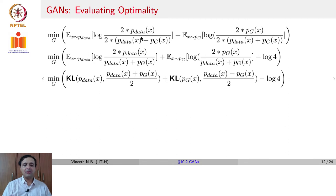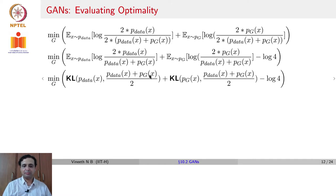The first term can now be written as a KL divergence between p_data(x) and (p_data(x) + p_g(x)) / 2 — since KL divergence is log p over q. Similarly, the second term is the KL divergence between p_g(x) and (p_data(x) + p_g(x)) / 2. We still have the minus log 4 term.